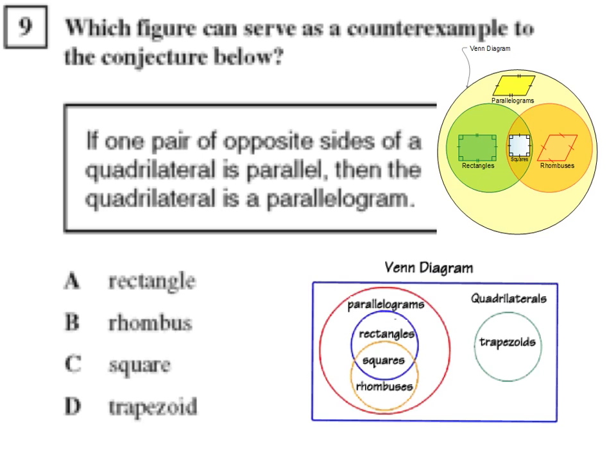But all rectangles, squares, and rhombuses fall into the category of parallelograms. Outside of that scope, we have trapezoids. So trapezoids have one pair of opposite sides, but they don't have two, which is required for a parallelogram.